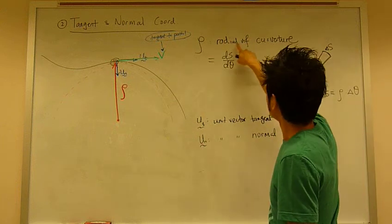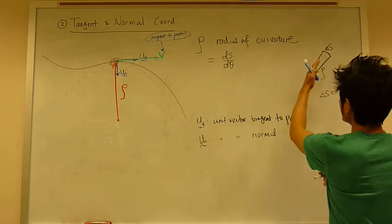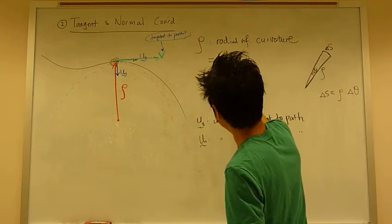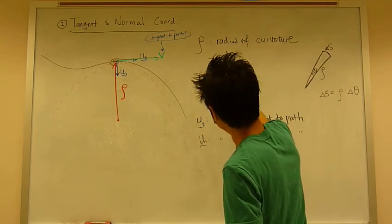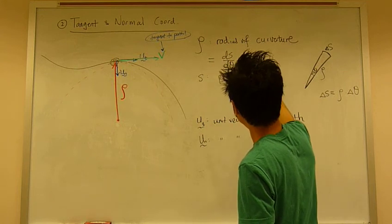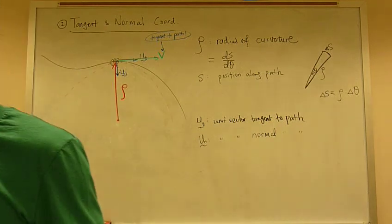So rho is the radius of curvature. The theta is just change of angle. And S is the position along the path, along the curved path.